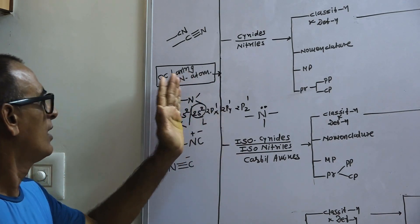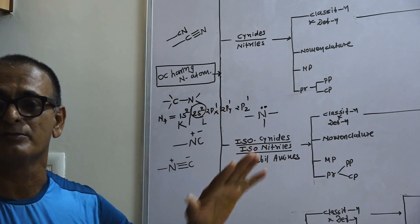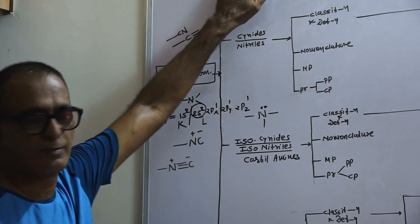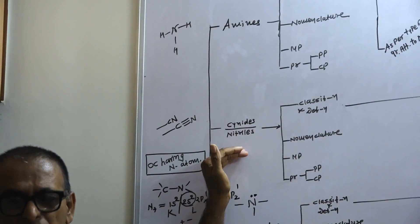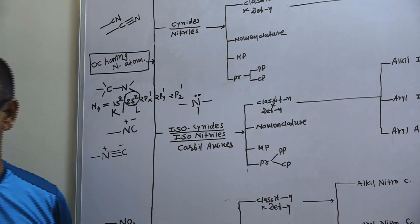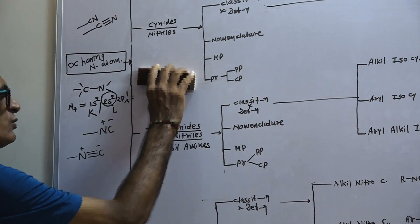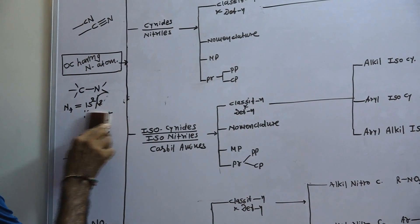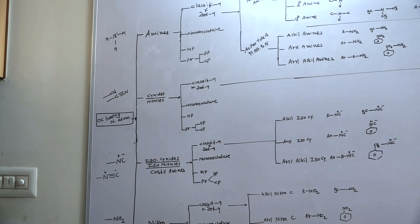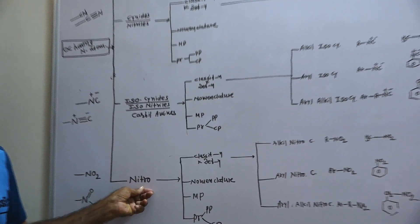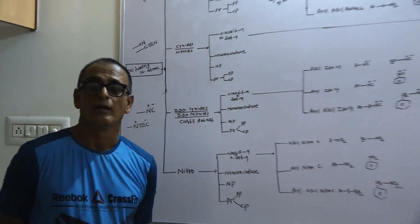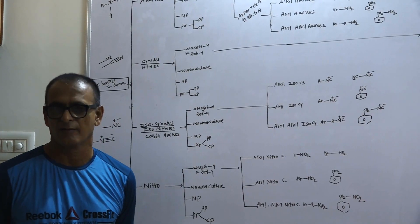Organic compounds having nitrogen atoms can be classified into four types. First, amines. Second, cyanides — otherwise known as nitriles. Third, isocyanides — otherwise known as isonitriles. These compounds are also known as carbylamine compounds. And finally, nitro compounds. This classification is carried out on the basis of the functional group present in the compound.